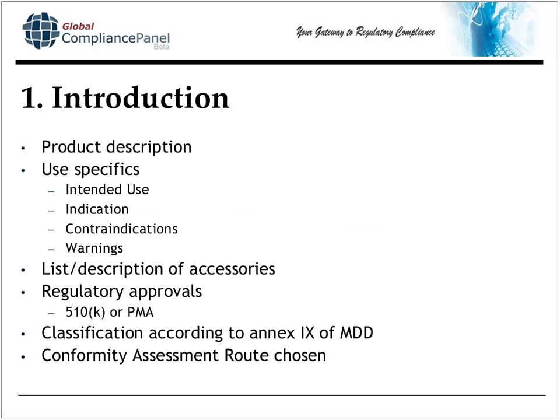The technical file introduction begins with a product description and use specifics. Quite a bit of this was not actually required in your design history file. Contraindications and warnings, for example, are required in a technical file but were not explicitly required in your DHF. A list or description of each of the accessories is also required, along with what regulatory approvals you have, and per Annex 9 of the Medical Device Directive, what classification your device is. Classification according to the Medical Device Directive is completely different from classification in the U.S.